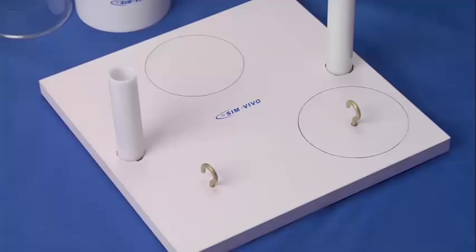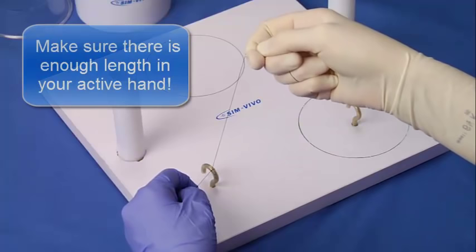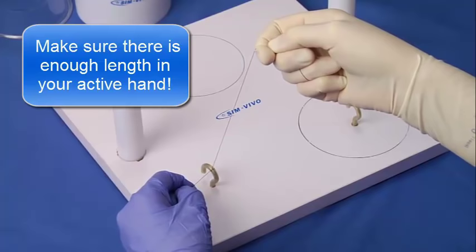When tying one-handed knots, it is important to make sure that the strand in the active hand has enough length for manipulation, usually more than six inches. If it is shorter, you will encounter difficulty retrieving the loose end of the suture as it is brought through the loop.